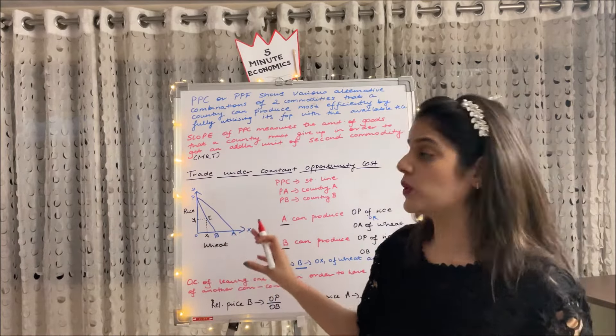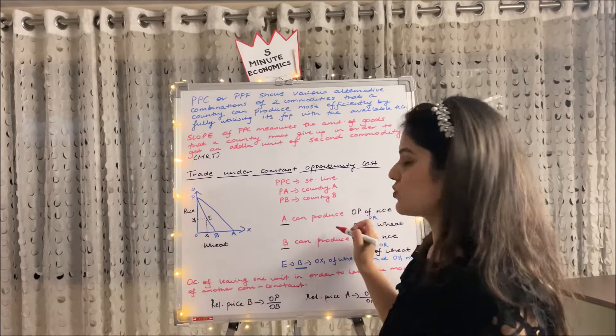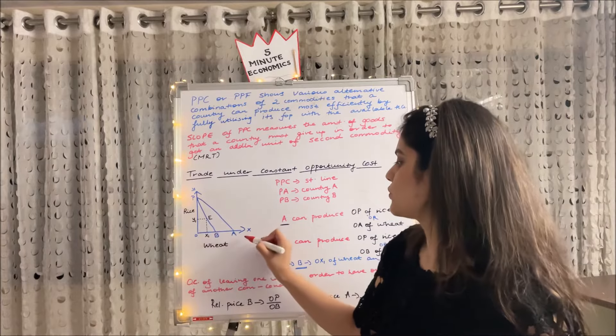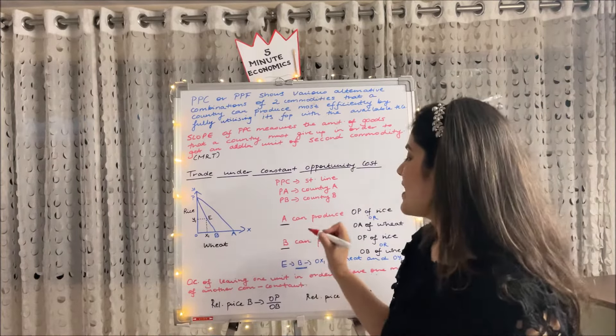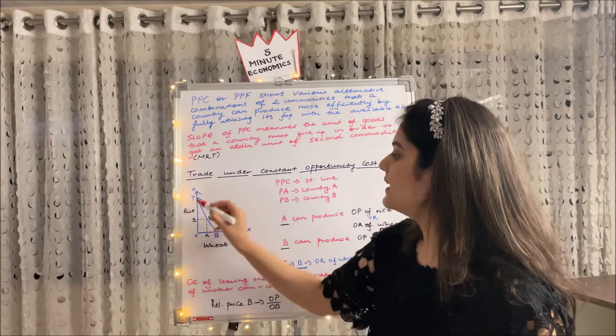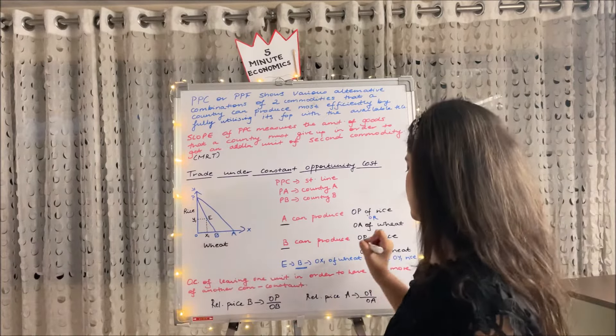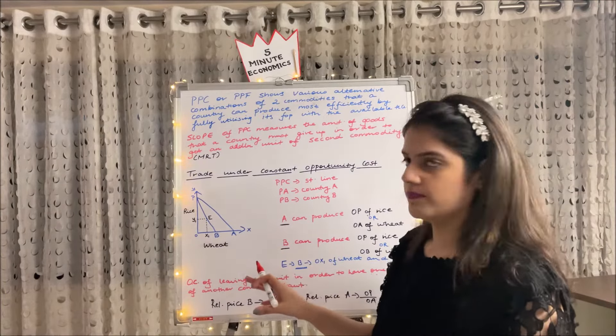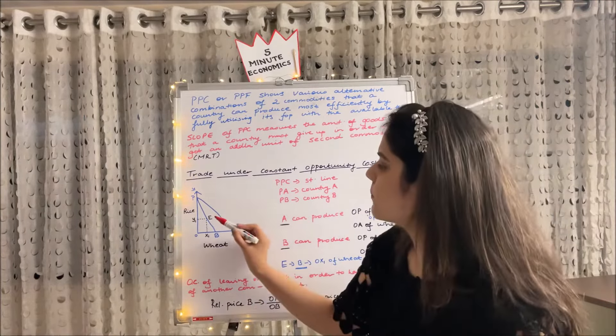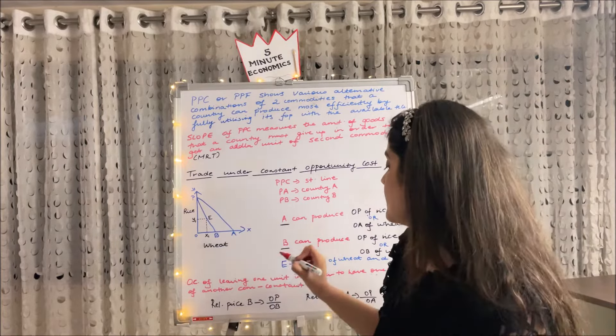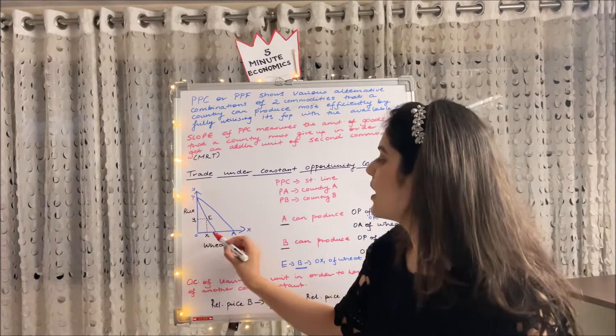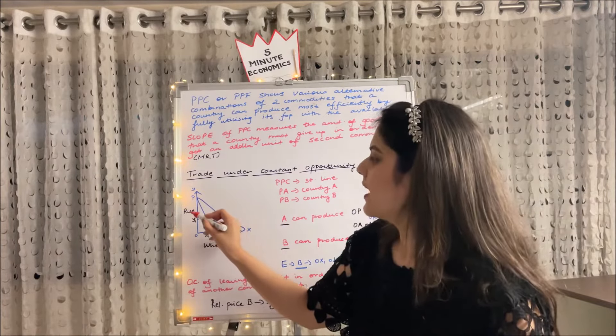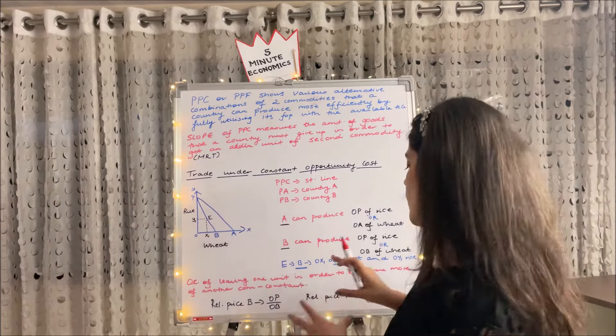Now, what we can see, the combinations—what can A produce? It can produce OP amount of rice or OA amount of wheat. That are the combinations available to A, whereas B can produce OP amount of rice and OB amount of wheat. That is the combination of B. But if country B wants to produce both of the rice and wheat, we can also have a point known as point E, which is like an equilibrium point. Here, it can produce OX1 amount of wheat, whereas it can also produce OY1 amount of rice.